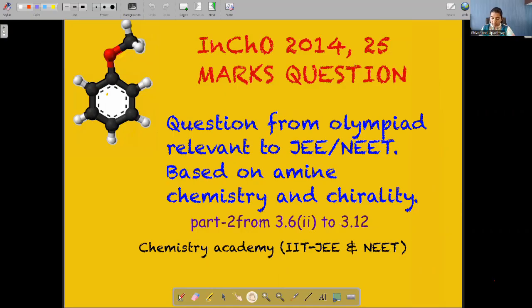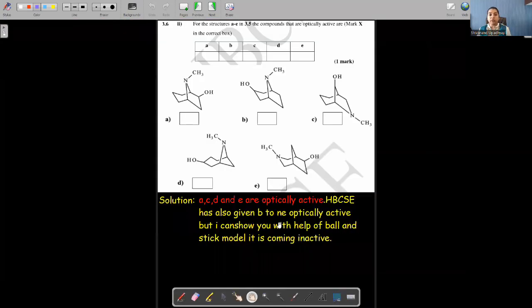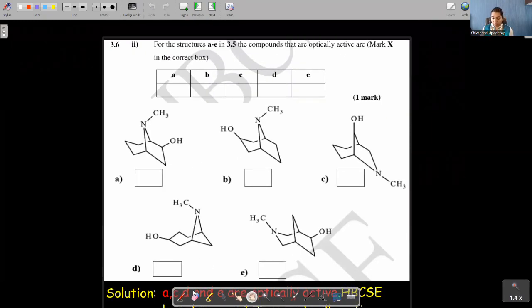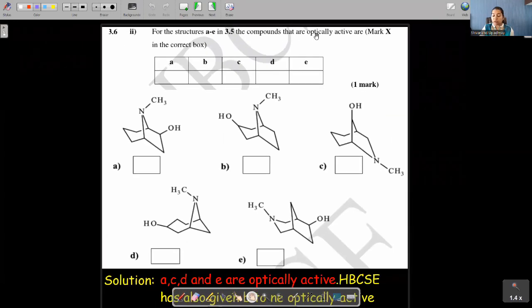So let's start from 3.6 Part 2. Here I have mentioned that this particular video will carry from 3.6 Part 2 to 3.12. Moving to question number 3.6.2, the question is, for this structure A to E in 3.5, the compounds that are optically active are, we have to mark X in the correct box.